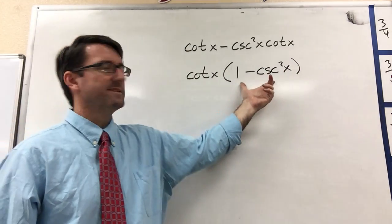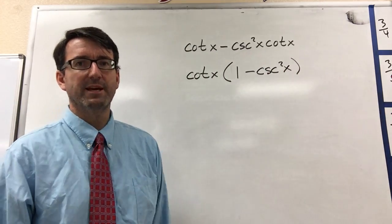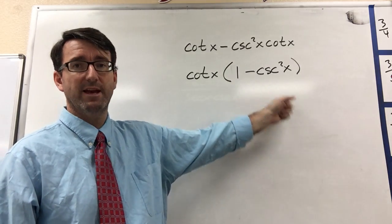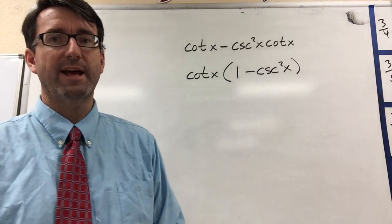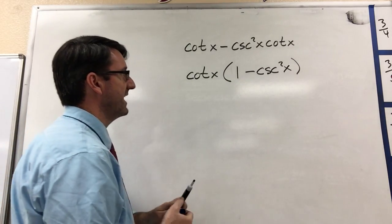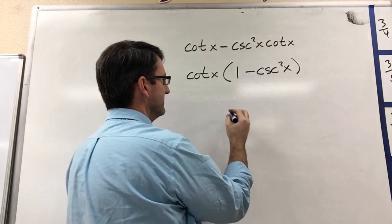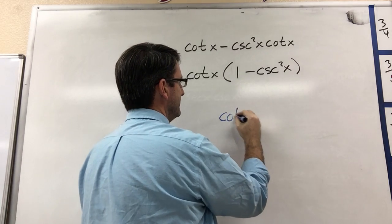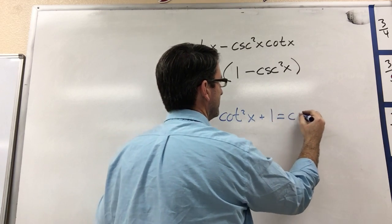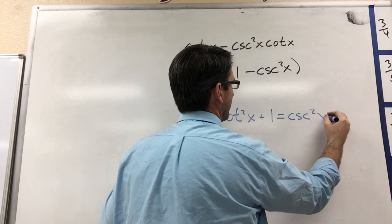Alright, now this looks like something that we recognize as one of our Pythagorean identities. But be careful with this. Remember that the Pythagorean identity that I'm thinking of is that cotangent squared x plus 1 is equal to cosecant squared x.